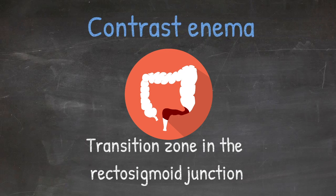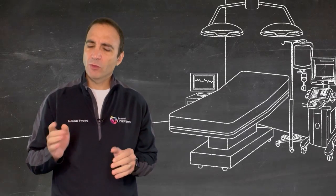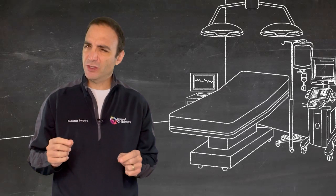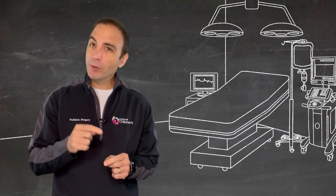All right, so what are you looking for on that enema? The classic finding is a transition zone in the rectosigmoid, but that transition zone really can be located anywhere within the bowel.